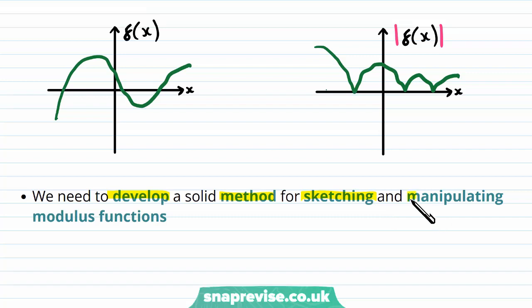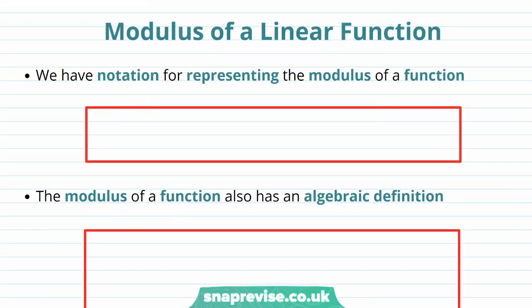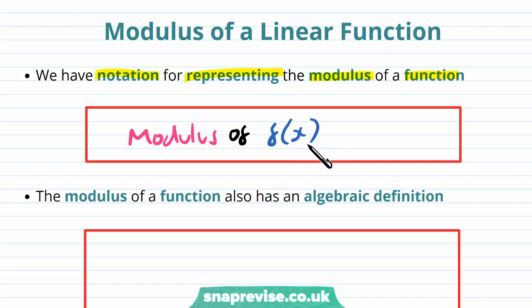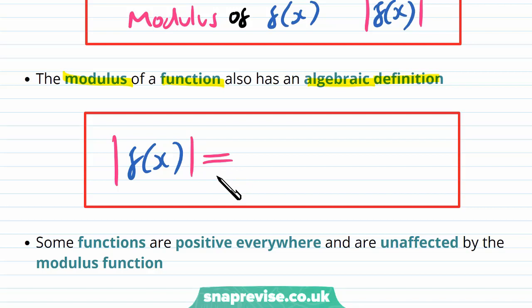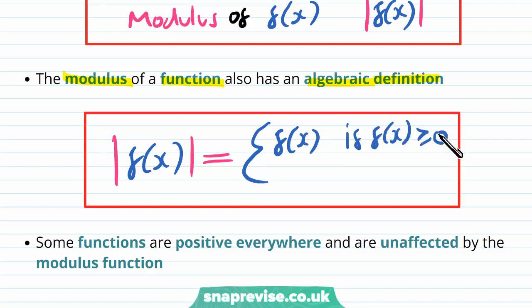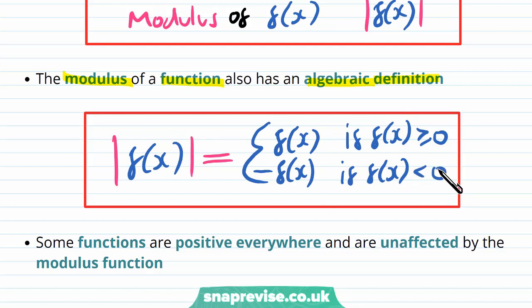We need to develop a solid method for sketching and manipulating modulus functions. Firstly we have notation for representing the modulus of a function — we write the modulus of f(x) as straight bars around the f(x). The modulus of a function also has an algebraic definition. The modulus of f(x) is defined as a piecewise function: it takes the value of f(x) if f(x) is greater than or equal to zero, or it takes the value minus f(x) if f(x) is negative. Notice that this definition always ensures that the modulus is positive — if f(x) is negative, it takes the negative of that negative and therefore is positive.